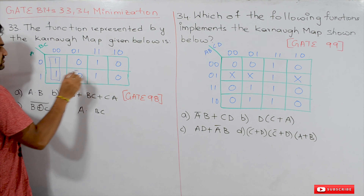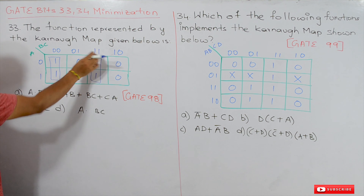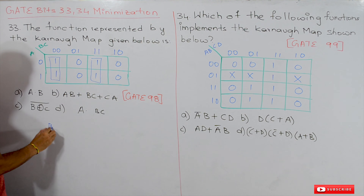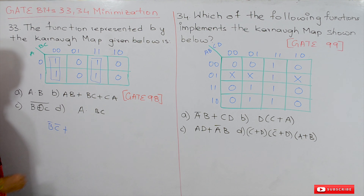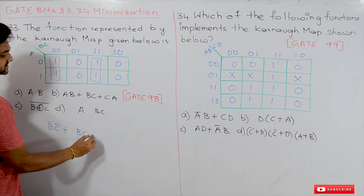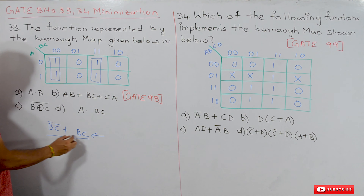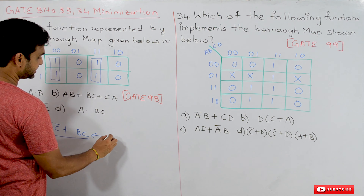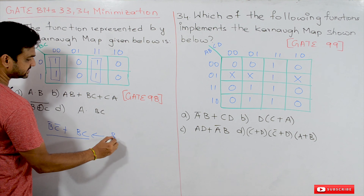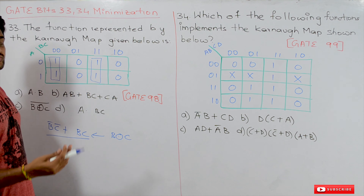After swapping and minimizing, the values are 1, 0, 1, 1, 0, 0. The maximum possible subcubes are: one subcube gives B complement C complement, and the other subcube gives B C.